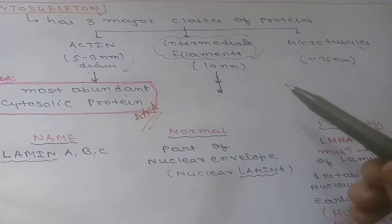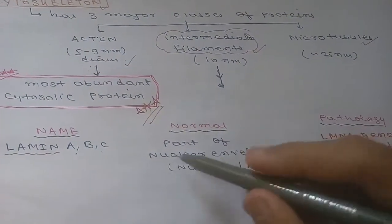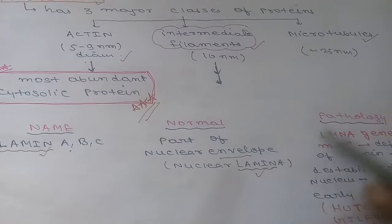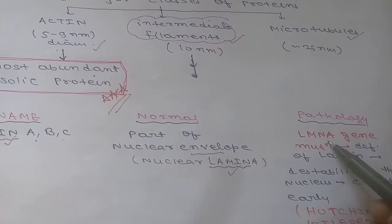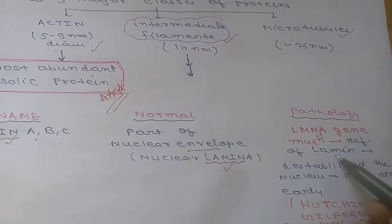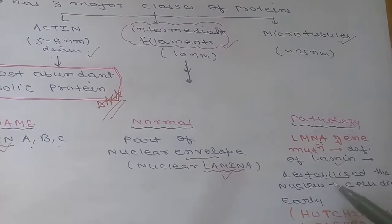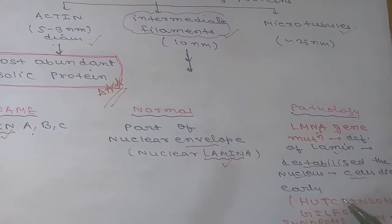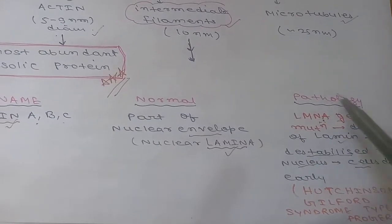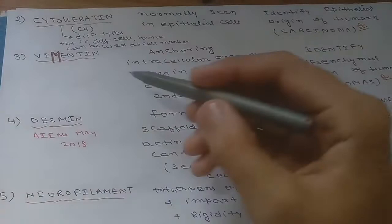We will now discuss five to six intermediate filaments, their normal function, and associated pathology. The first is lamin, types A, B, and C. Lamins are normally part of the nuclear envelope, forming the nuclear lamina. If the LMNA gene is mutated, there is lamin deficiency, leading to destabilization of the nucleus, causing cells to die early. This type of progeria caused by LMNA mutation is known as Hutchinson-Gilford syndrome.